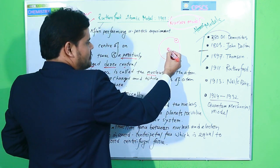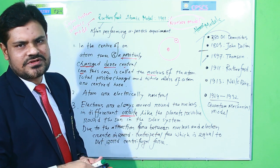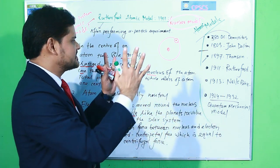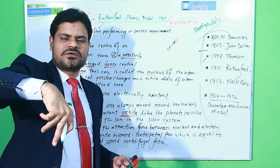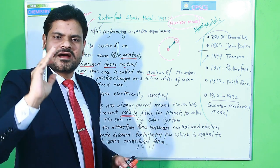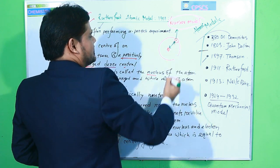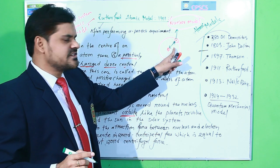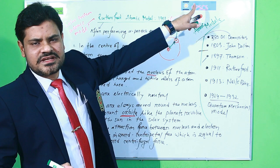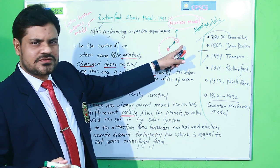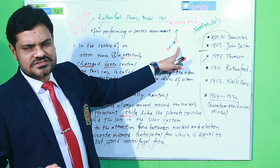Due to attraction between the positive nucleus and negative electrons, a centripetal force is created. Since electrons move around the nucleus, they also have an outward centrifugal force. Rutherford said the centripetal force and the centrifugal force are equal, which is why the electrons revolve around the nucleus and cannot escape from the atomic structure.